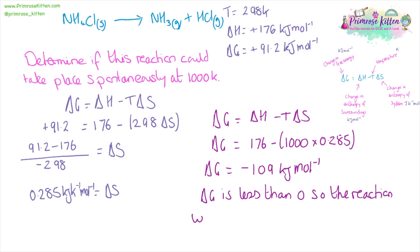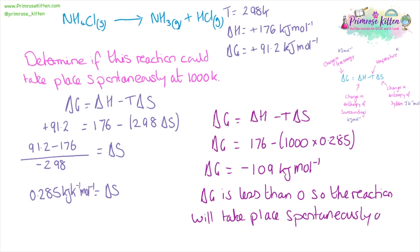With these sorts of questions, it is always good to write a sentence at the end, not just leaving it at the calculation step. You have to show that you know that because delta G is less than zero, the reaction would take place spontaneously at 1000 Kelvin. This is the bit that actually answers the question; all of the rest is the working you need to get there.